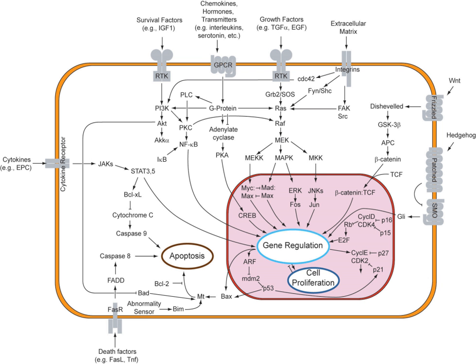Cell signaling can be classified as either mechanical or biochemical based on the type of the signal. Mechanical signals are the forces exerted on the cell and the forces produced by the cell; these forces can both be sensed and responded to by the cells. Biochemical signals are biochemical molecules such as proteins, lipids, ions, and gases. These signals can be categorized based on the distance between signaling and responder cells.